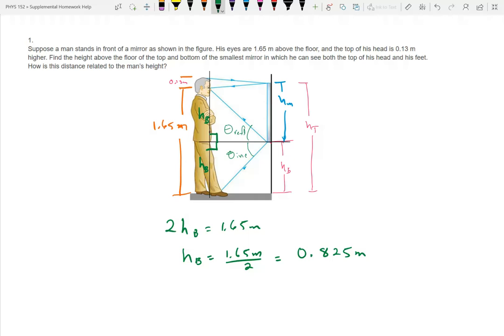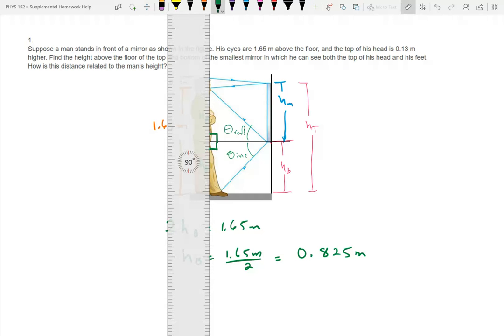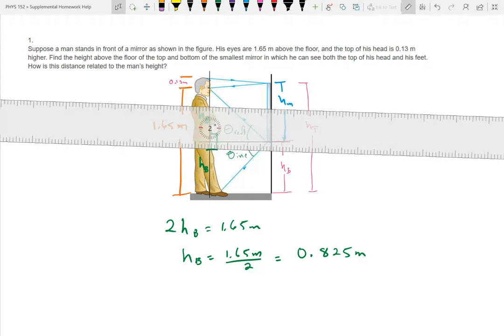Thus, HB is equal to 1.65 meters over 2 is equal to 0.825 meters. So that's the height the bottom of the mirror is going to have to be. That's all we have to do. Well, that's the first half. Right. I somehow thought I was going to have to use sine or cosine. No, there's no trig in this. It's just, well, there's the similar triangles. Now we're going to do exactly the same thing for the top half.